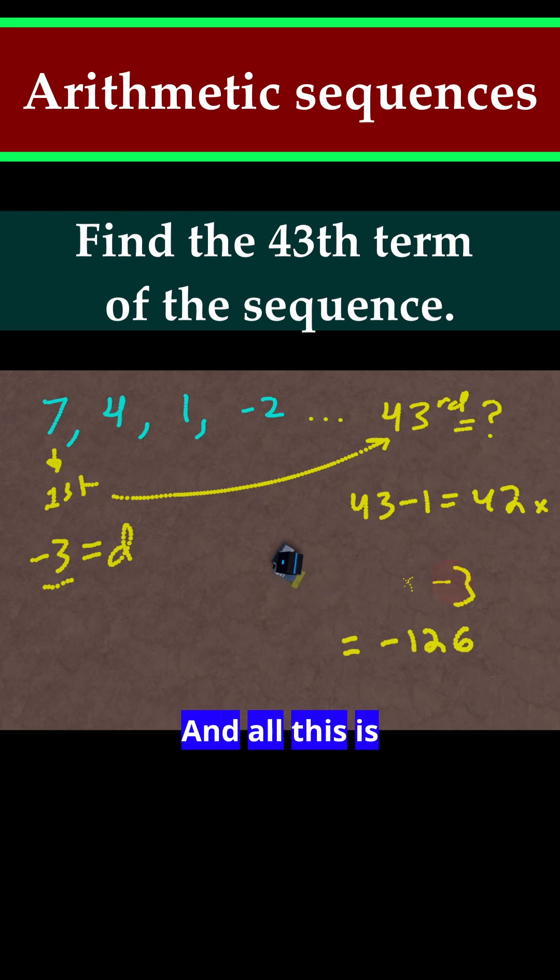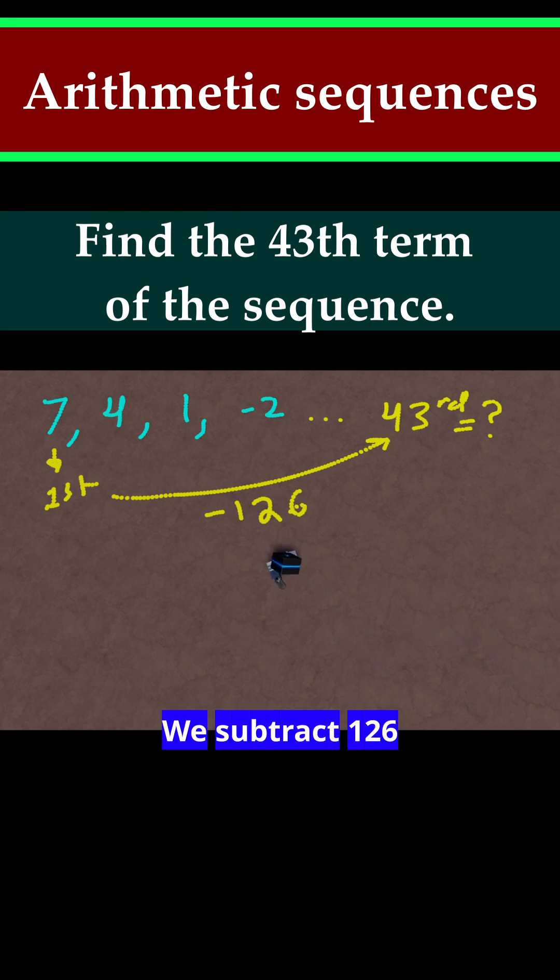So let me erase all this now. And all this is telling us is that to go from 7, our first term, to the 43rd term, we have to subtract 126 in total. So we start at 7, we subtract 126, and you get the 43rd term.